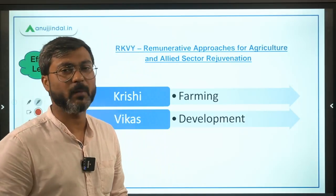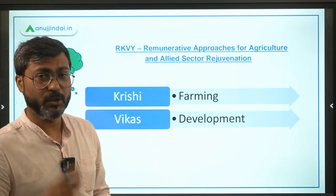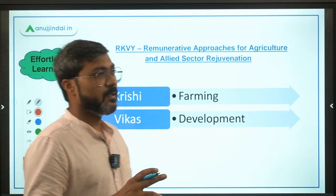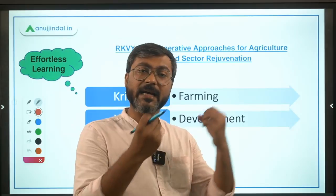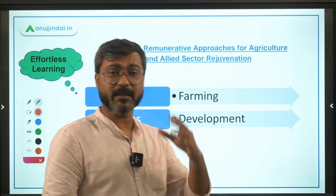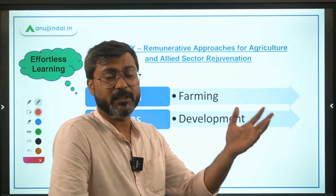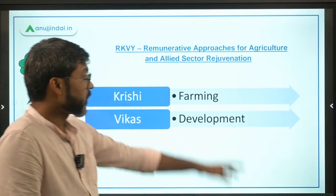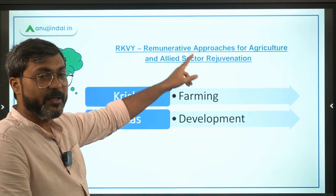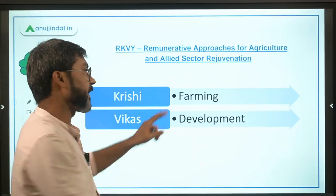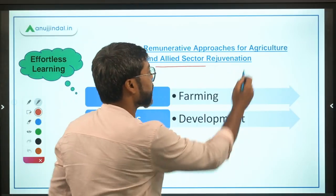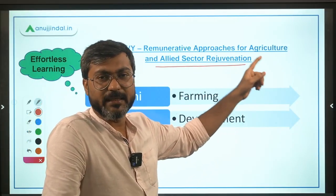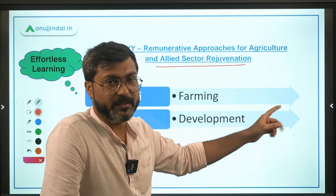There is a full form of RAFTAR also — do remember it because you never know if a question comes from the full form. The full form of RAFTAR is: Remunerative Approaches for Agriculture and Allied Sector Rejuvenation.